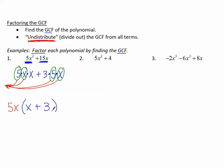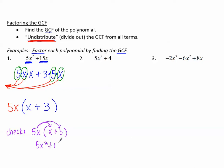So these are the factors: 5x times the binomial x plus 3. If I want to, I can check by distributing again. 5x times x makes 5x squared, and 5x times 3 makes 15x. This is what I started with, so I know I'm correct. This is a correct factorization of this binomial.